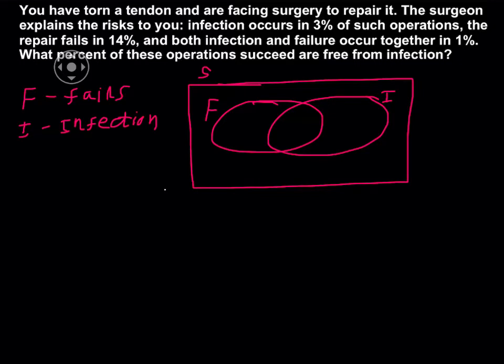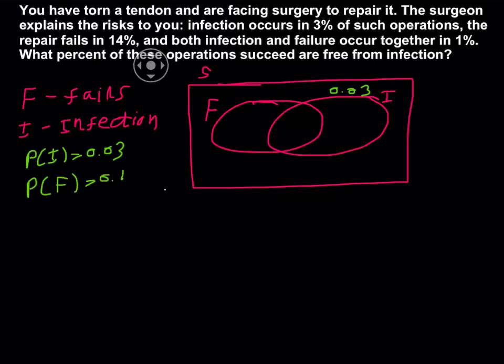So now go back to the problem. Infection occurs in 3%. That means probability of I equals 0.03. So in this circle, we should have probability 0.03. Then the repair fails in 14%, so F equals 0.14.